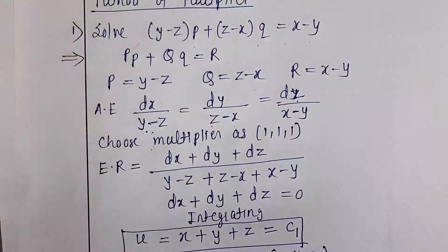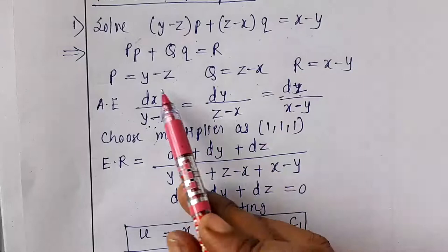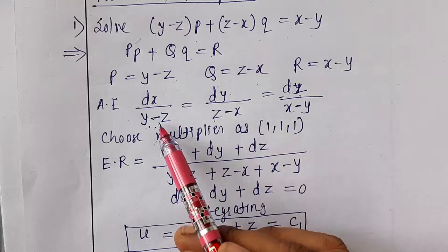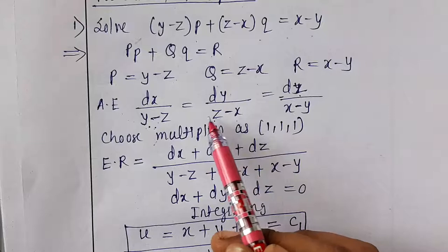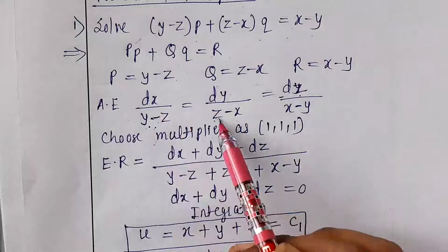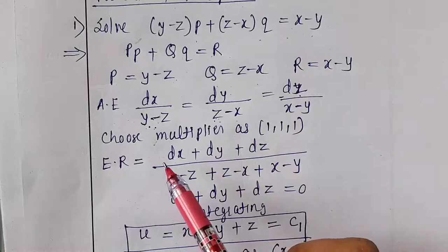Now, why and how do we choose multipliers? If we consider the first two ratios, they involve x and y, so the z terms must cancel. But since the terms are in addition and subtraction, z cannot be cancelled out. So we cannot consider any two ratios directly using the grouping method.